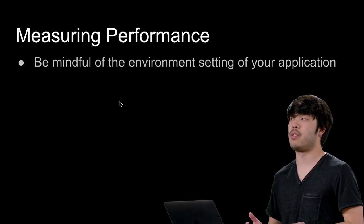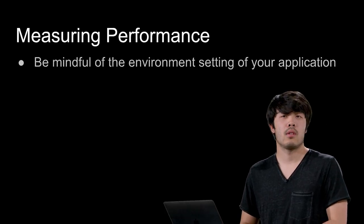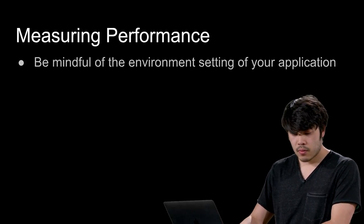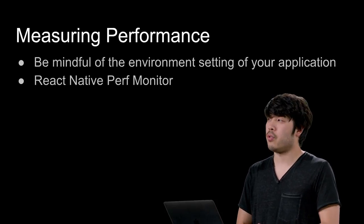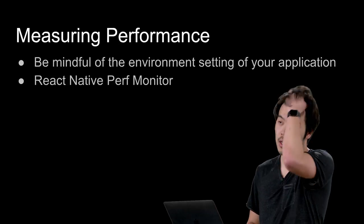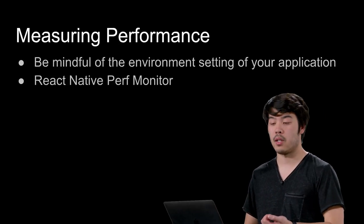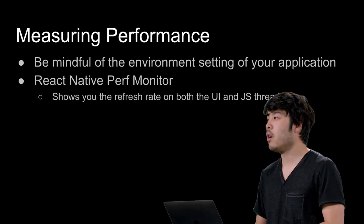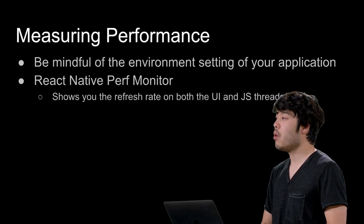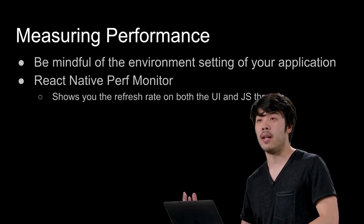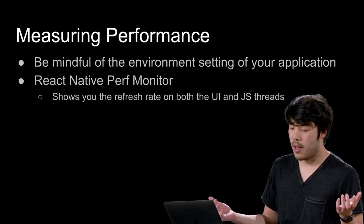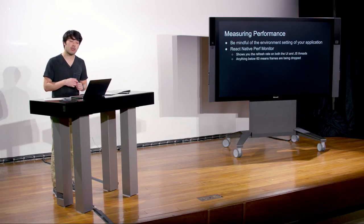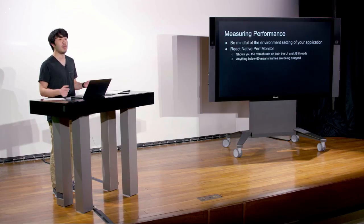There are tools built into React Native to benchmark performance. One is called the React Native performance monitor. It shows the refresh rate of both your UI and JavaScript threads — recall that React Native has one thread for rendering UI on the native side and one thread executing your JavaScript. Anything below 60 frames per second means we're dropping frames, indicating a potential bottleneck.